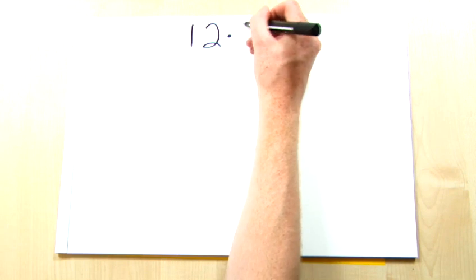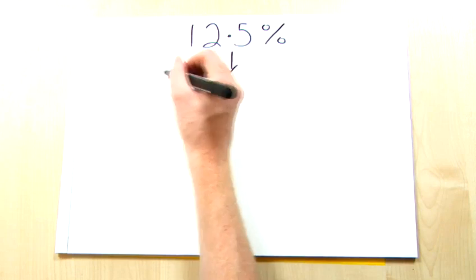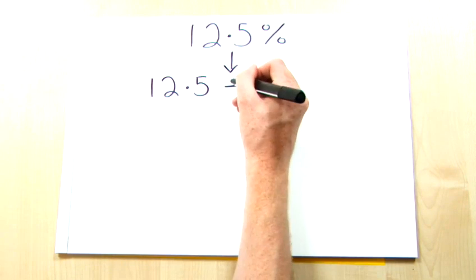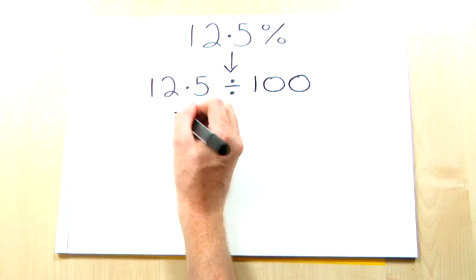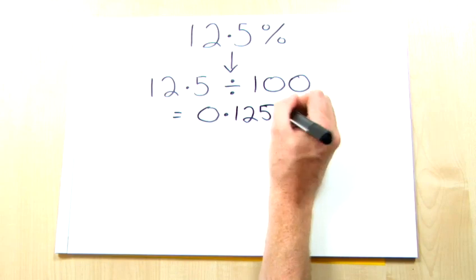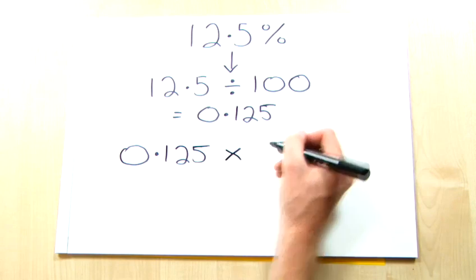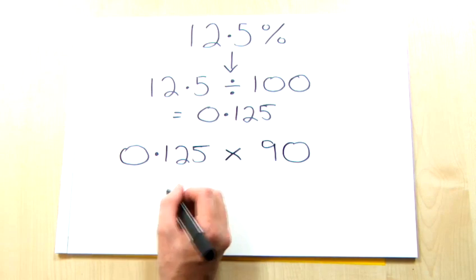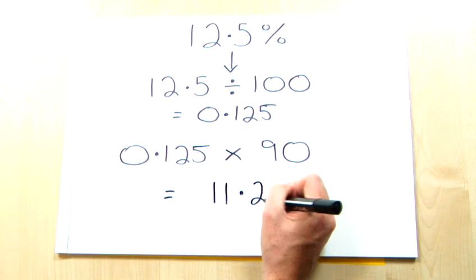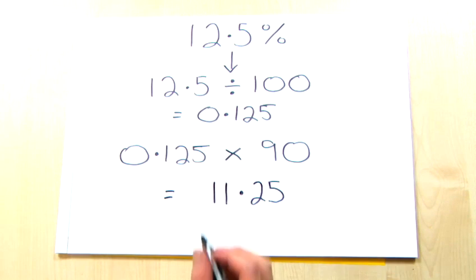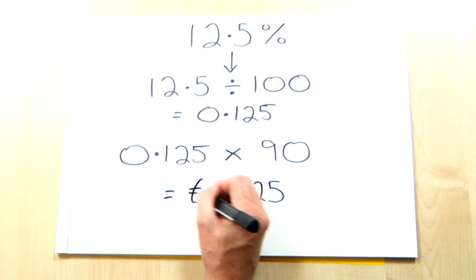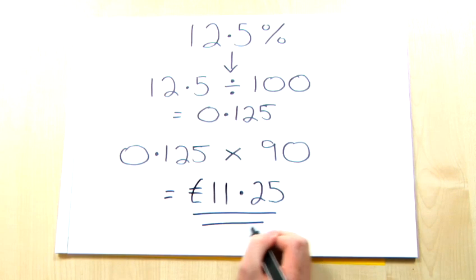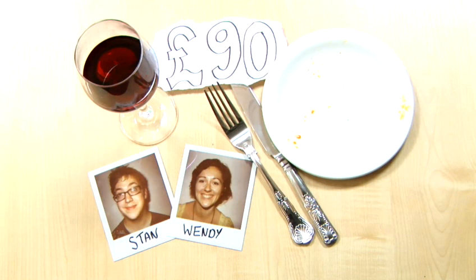Similarly to the previous task, divide the percentage by 100 to convert it to a decimal. So 12.5 becomes 0.125. Now take this figure and multiply it by 90, which is the total of their bill. This should give you an answer of 11.25. So a 12.5% tip on a £90 bill is £11.25, and money well spent too.